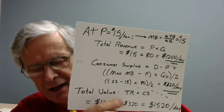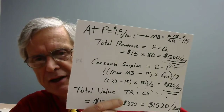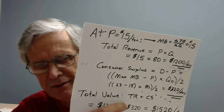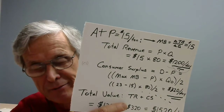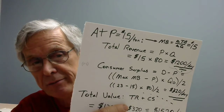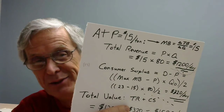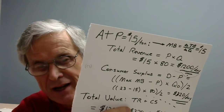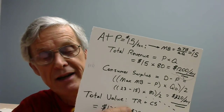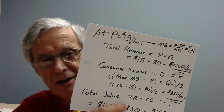To find demand minus price: take the max MB — that was $23 — minus the price of $15, times Q0 which is 80, then divide by 2. Why divide by 2? It's a triangle, so one-half base times height. The economic reason: $23 minus $15 is $8, which is the maximum gain from trade. The minimum is $0 on the last unit. The average gain from trade is ($8 + $0) divided by 2 = $4. Multiply $4 by 80 units to get $320 total gain from trade. Next I'll record the supply discussion.